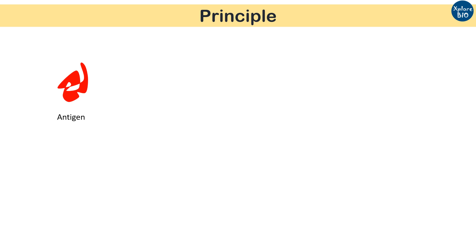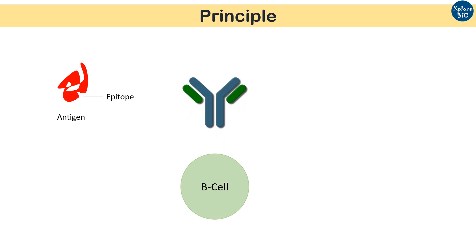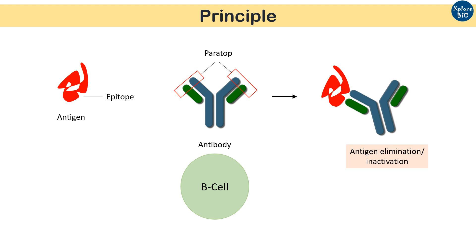Antigens are substances that cause our body to produce an immune or defense response. Antigens have distinct surface features known as epitopes. In an immune response, B-cells of our body may produce Y-shaped immunoglobulins known as antibodies against these antigens. Antibodies contain a unique paratope region for binding to the specific epitope of the antigen, and they help in deactivating or eliminating antigens from our body, sometimes with the help of immune cells.